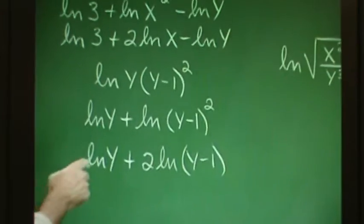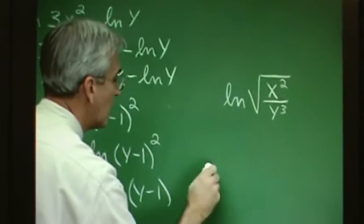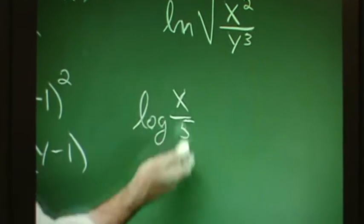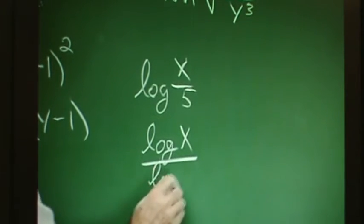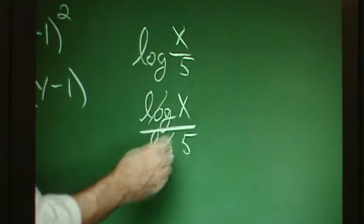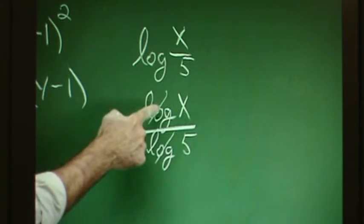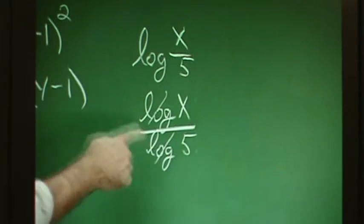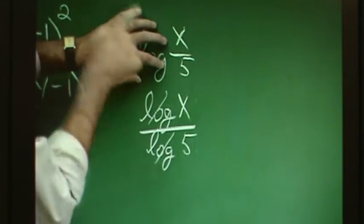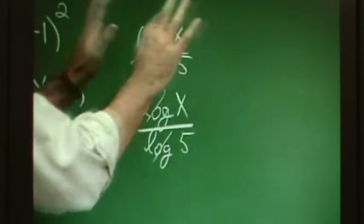Let me point out another frequently made mistake. When we have log of x over 5, we know this is log x minus log 5. There's a big difference between that and log x over log 5 — a completely different thing. In the latter, you cannot cancel the logs to get x over 5. Log is an operation symbol. Just as you couldn't cancel radicals in the square root of x over the square root of 5, be careful with this. The quotient property applies to the logarithm of a single quotient, not the quotient of two logarithms.